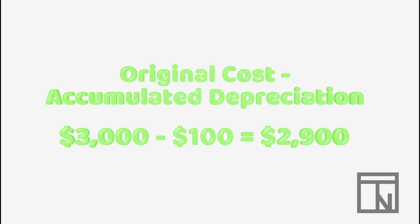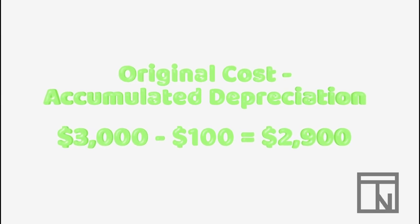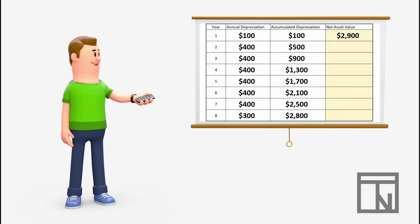So, at the end of year 1, his asset had a book value of $2,900, the $3,000 minus the $100.